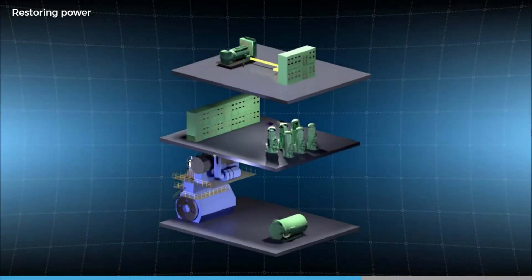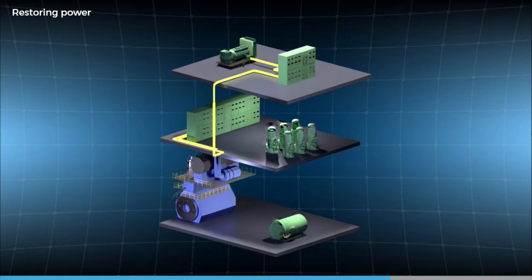Once you get it started, restore power to the main switchboard, and make sure you start any additional cooling pumps needed before it overheats. And get the boiler going again to restore steam.